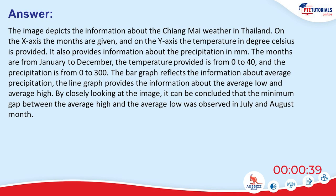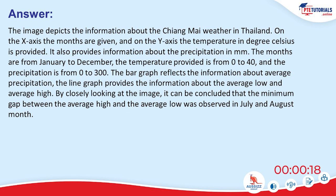The image depicts information about Chiang Mai weather in Thailand. On the x-axis the months are given, and on the y-axis the temperature in degrees Celsius is provided. It also provides information about precipitation. The months are from January to December, the temperature ranges from 0 to 40, and the precipitation from 0 to 300. The bar graph reflects average precipitation and the line graph shows average low and average high. The minimum gap between average high and average low was observed in July and August.